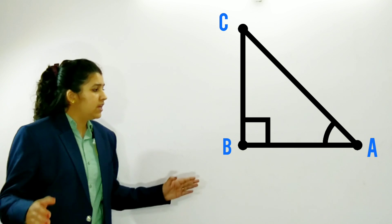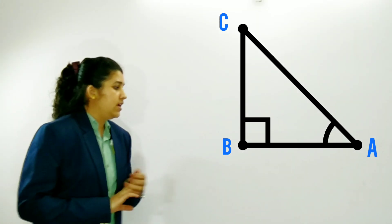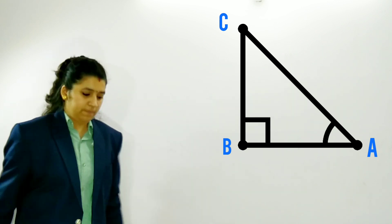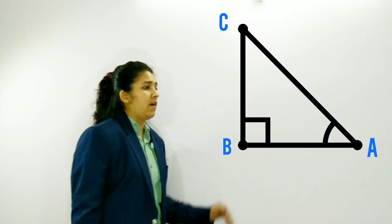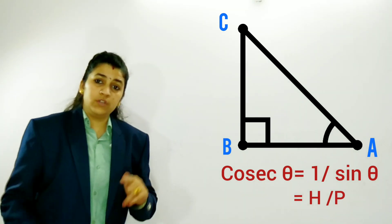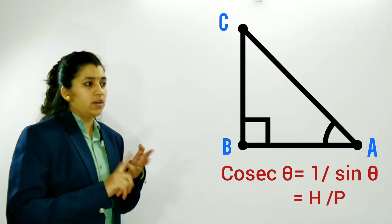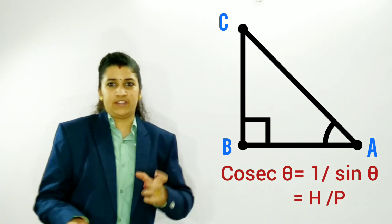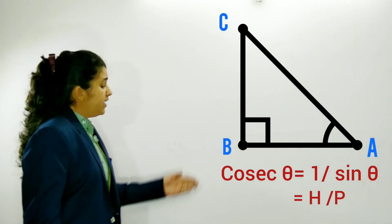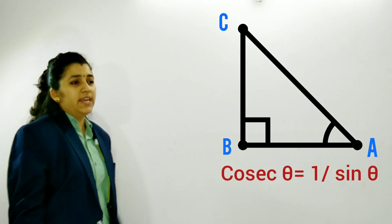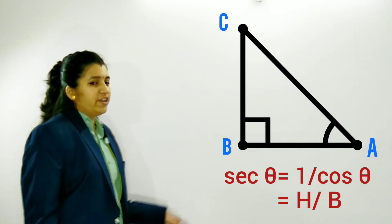Moving on, there are 3 more ratios: sec theta, cosec theta, and cot theta. Cosec theta is the reciprocal of sin theta, sec theta is 1 upon cos theta, and cot theta equals 1 upon tan theta. If you know sin theta, cos theta, and tan theta, you can calculate the remaining three — no need to memorize them separately.